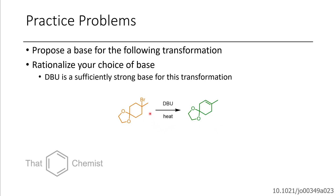In the next example, we asked whether we could use a specific base to cause this transformation to get this alkene. There's also a methyl position here, and this methyl group has three protons that something like tert-butoxide, which is a little bit bulkier, would prefer to abstract first. So to get the following product, we could just use DBU. It's actually a strong enough base for this transformation. If you're interested in the paper where they show this type of transformation, you can look at the DOI shown here.